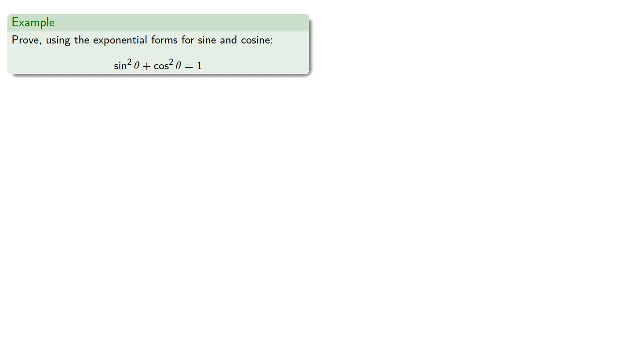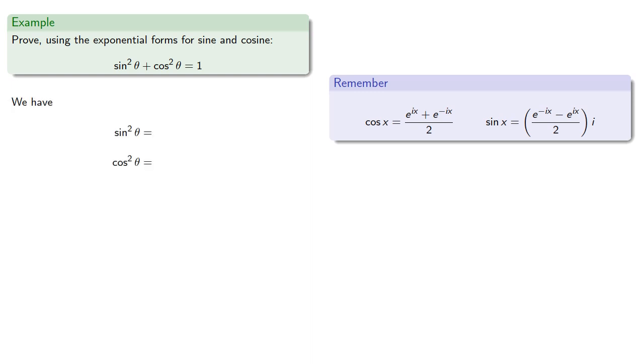As a warm up, let's prove our basic trigonometric identity, sine squared plus cosine squared equal to 1 using the exponential forms. So those exponential forms are, and let's find sine squared and cosine squared in terms of those exponential forms.